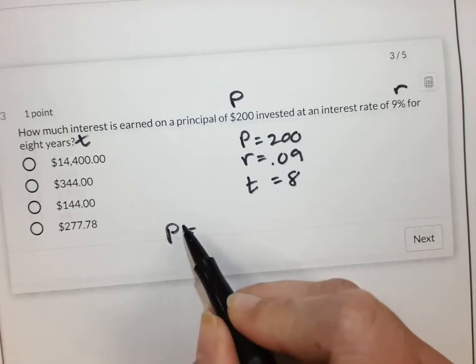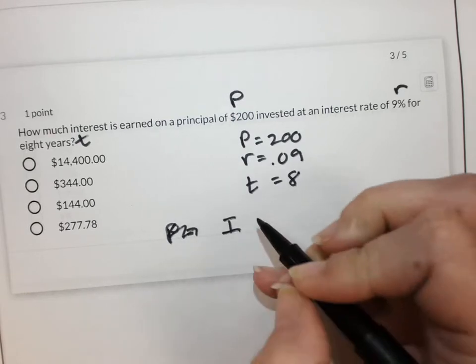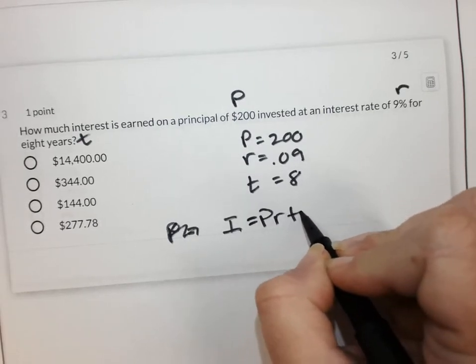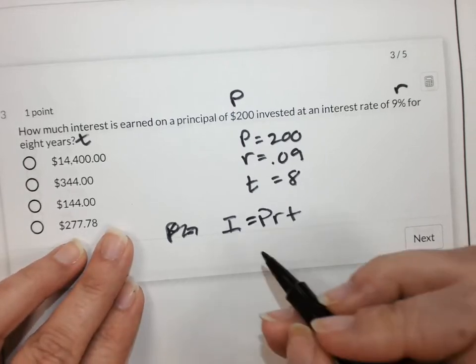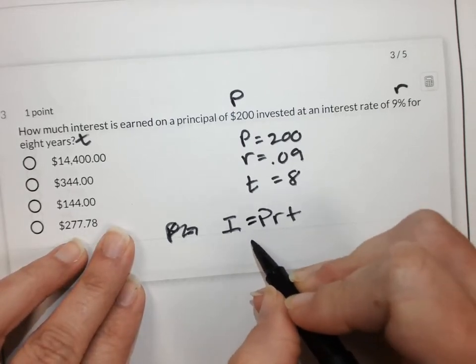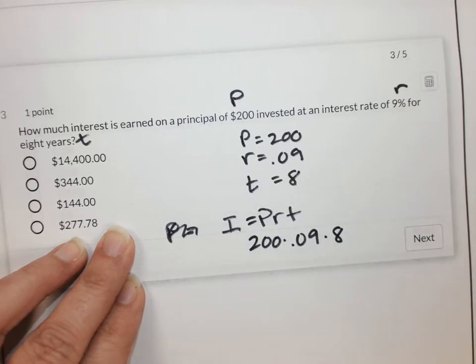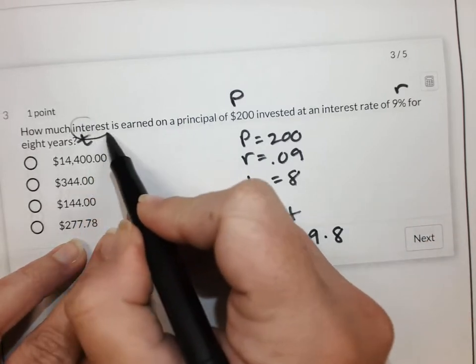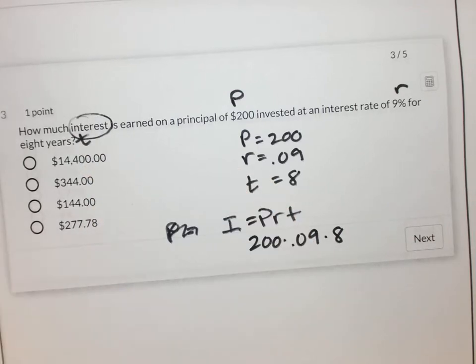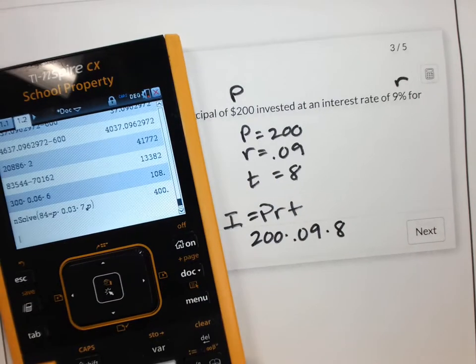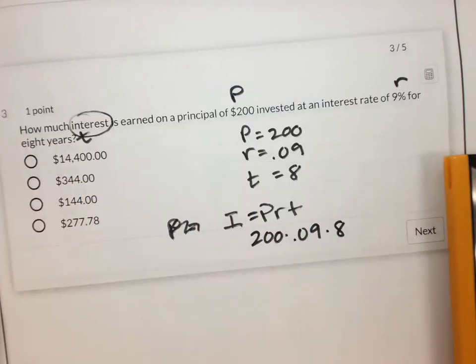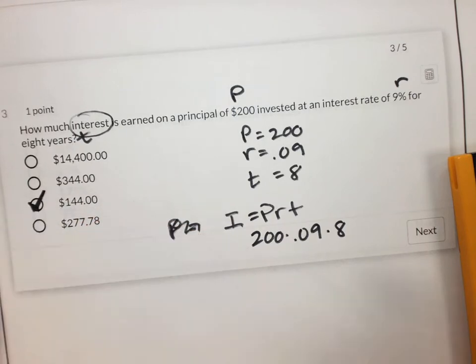I equals PRT. P is 200. My rate is 0.09. And I'm going to times this by eight. And we are looking for the interest. 200 times 0.09 times eight gives me 144. So there's my interest.